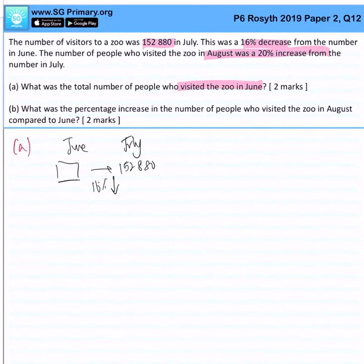We realize that after a 16% discount, 84% would represent 152,880, because from 100% it dropped by 16%, so the leftover is 84%. So we can find out what is 1% first. 1% is 152,880 divided by 84, and that is 1,820.